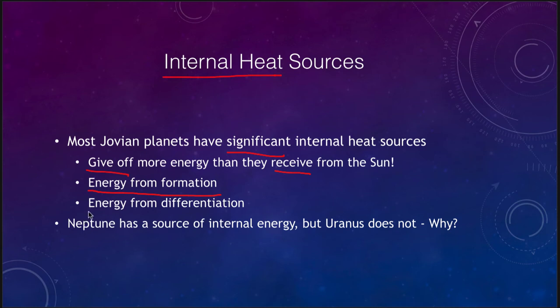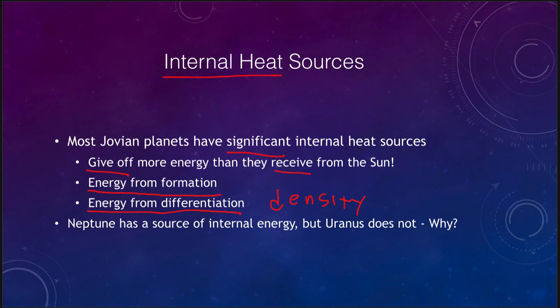There can also be energy from differentiation, which is a separation of materials by density. That happens in Saturn's atmosphere — Saturn is raining out helium, with helium going down towards the inner layers while hydrogen rises to the surface. That potential energy being converted to kinetic energy and then to heat warms up the interior of the planet. Both Jupiter and Saturn have significant internal heat sources and give off a lot more energy than they receive from the sun.